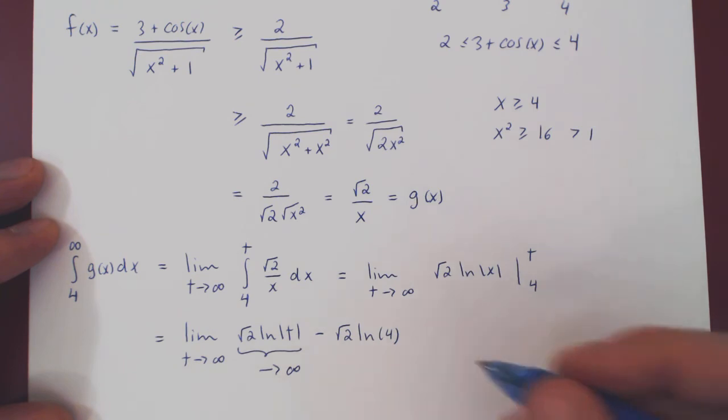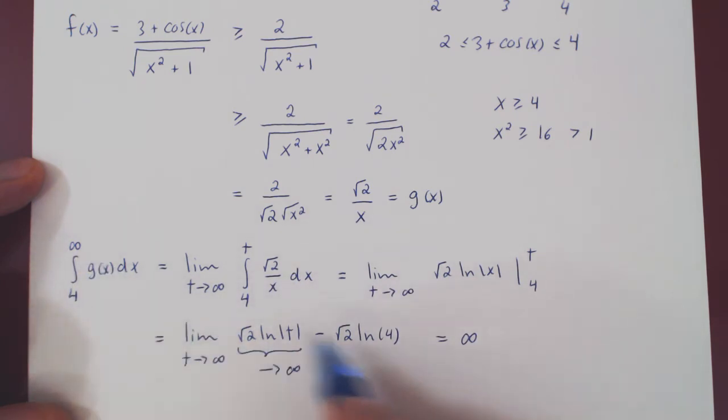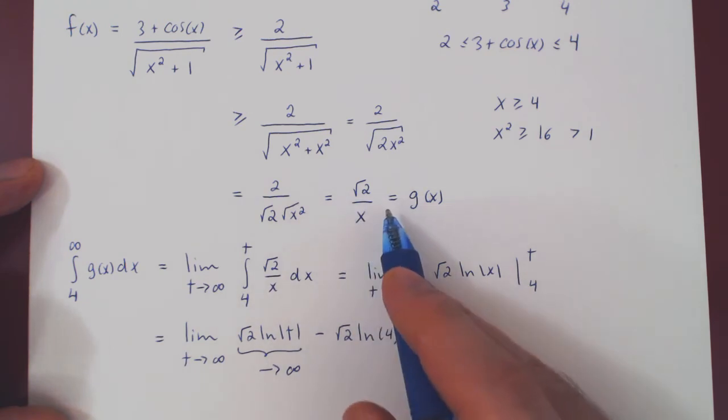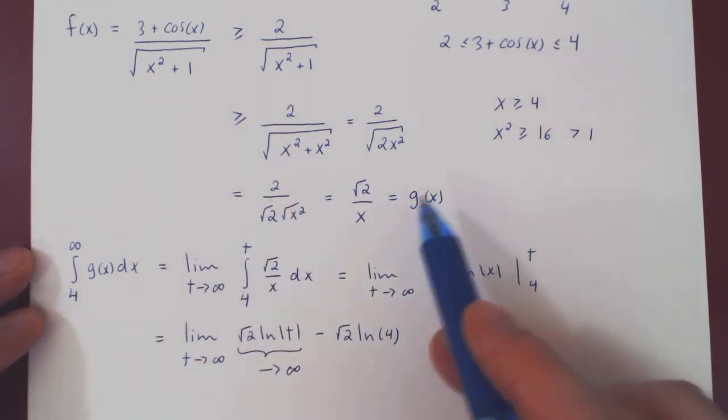So this term goes to infinity. Infinity minus a constant is simply infinity. So the integral of g from 4 to infinity blows up, but if you think of it, f was bigger than g. So the integral of f is indeed bigger than the integral of g.